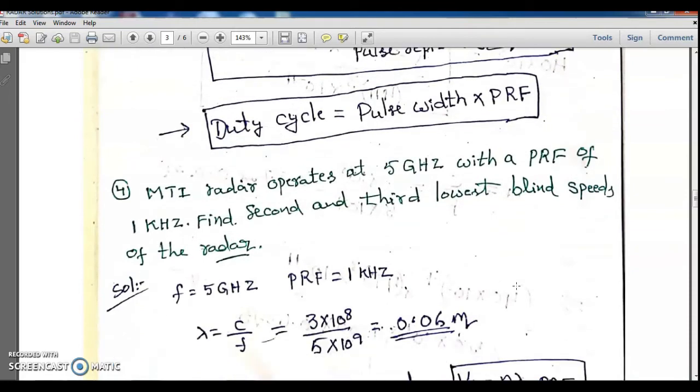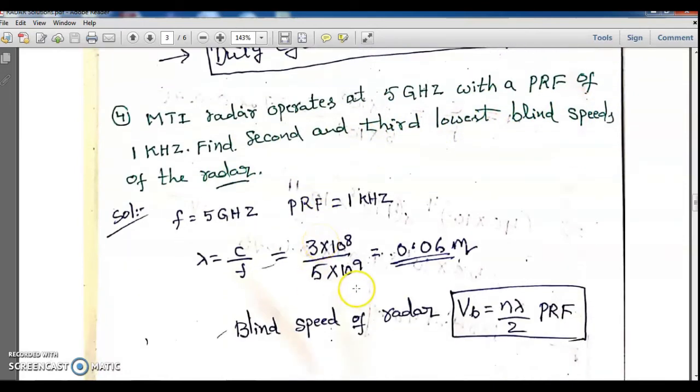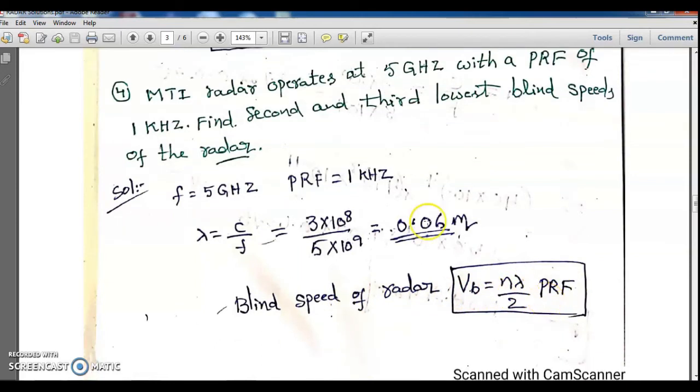Next problem: An MTI radar operates at 5 gigahertz with a PRF of 1 kilohertz. Find the second and third lowest blind speeds of the radar. These are the given parameters. The blind speed equation is Vb equals n times lambda divided by 2 times PRF.